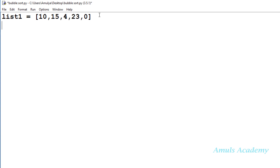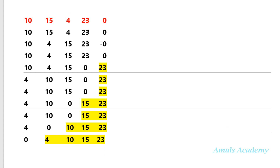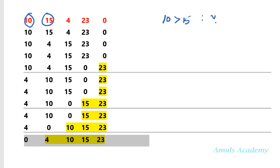According to the algorithm, first I need to compare the first element and the second element — so 10 and 15. If 10 is greater than 15 we need to swap. These are the same numbers we took in the previous tutorial. So we compare 10 and 15: if yes then swap, no then do nothing. Next I take 15 and 4, check whether 15 is greater than 4 — yes, so 4 and 15 are swapped. In the same way I need to compare all the values.